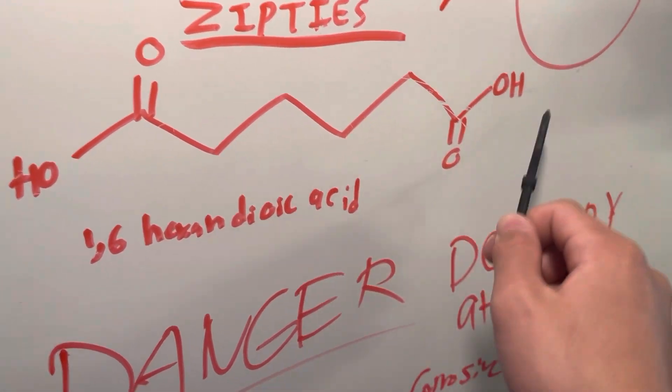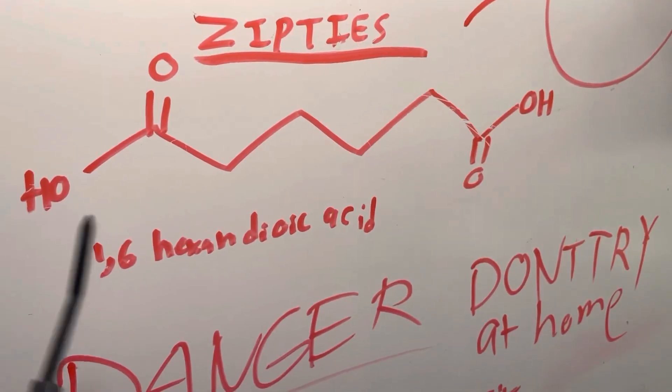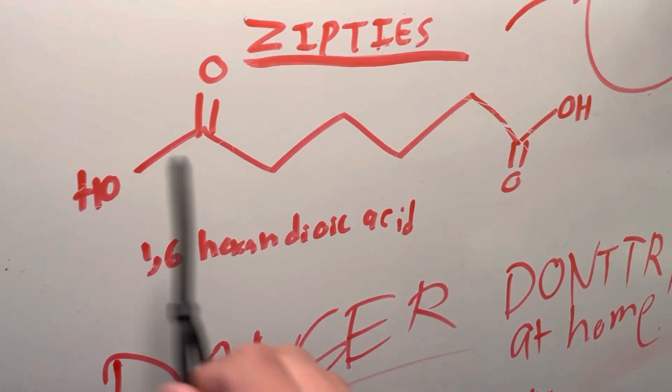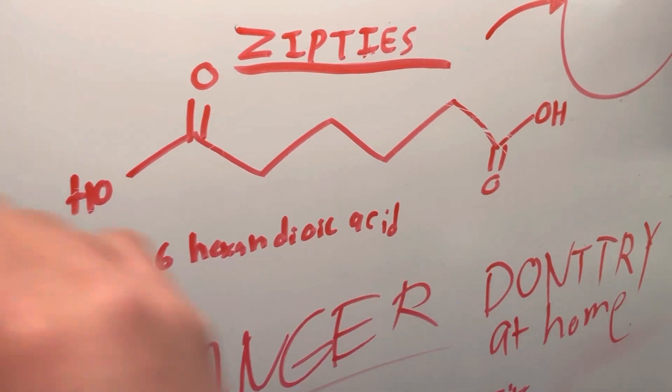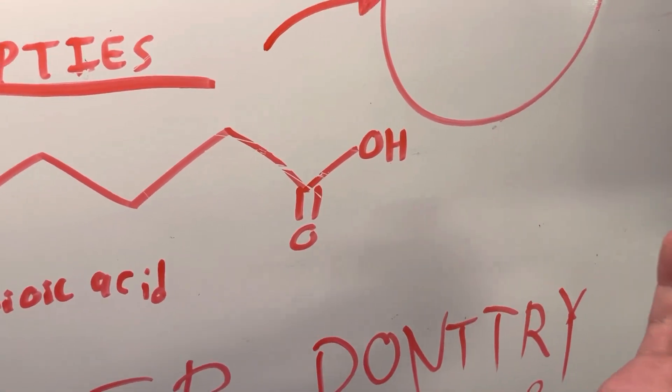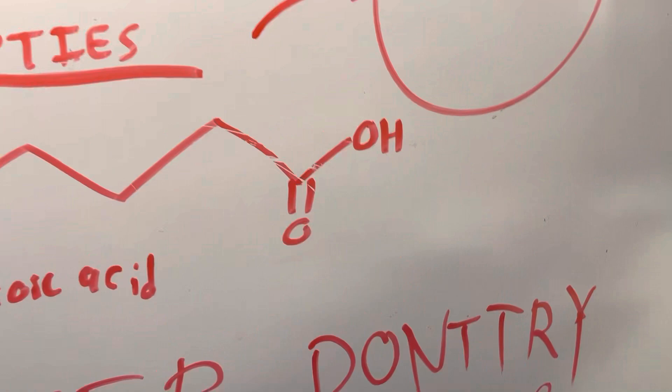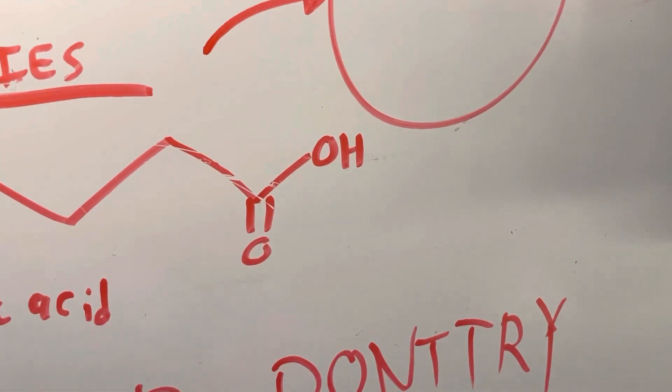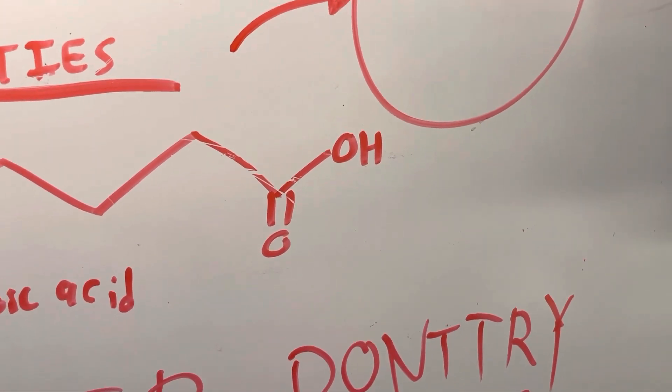There's 6 carbon chains and another chain of 6 carbons, and they form together to form polyamide. And what we're doing is we're taking that polymer and we're hydrolyzing it.